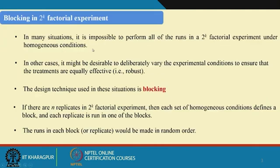In many situations it is impossible to perform all the 2^k factorial experiments under homogeneous conditions. In other situations, the experimenter deliberately varies the experimental conditions to ensure the product is effective under different situations — this is the concept of robust design. When you have insufficient resources such as raw materials or operators, or when you deliberately create heterogeneous situations, the design technique effectively used is called blocking.